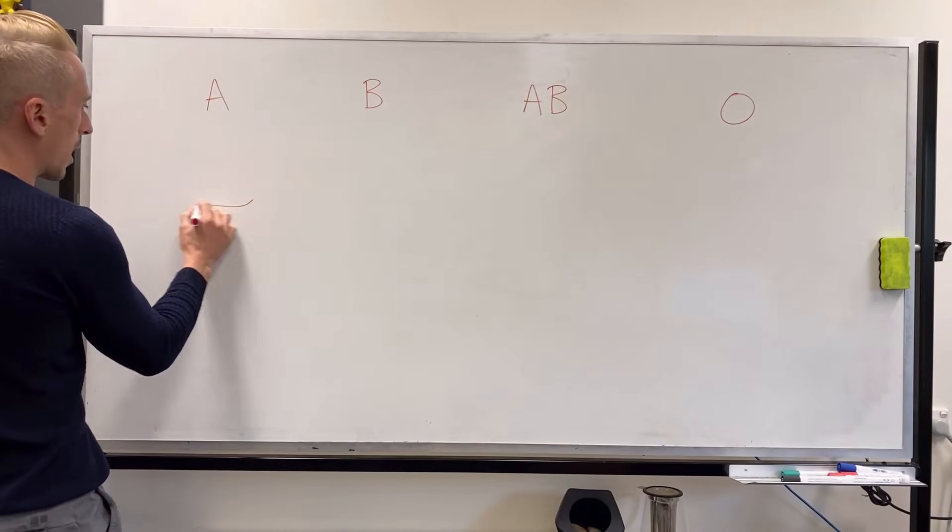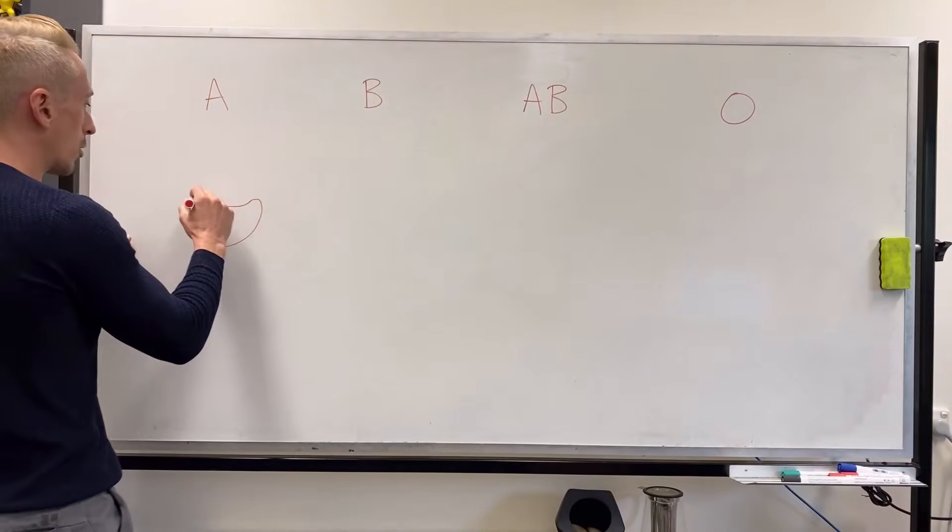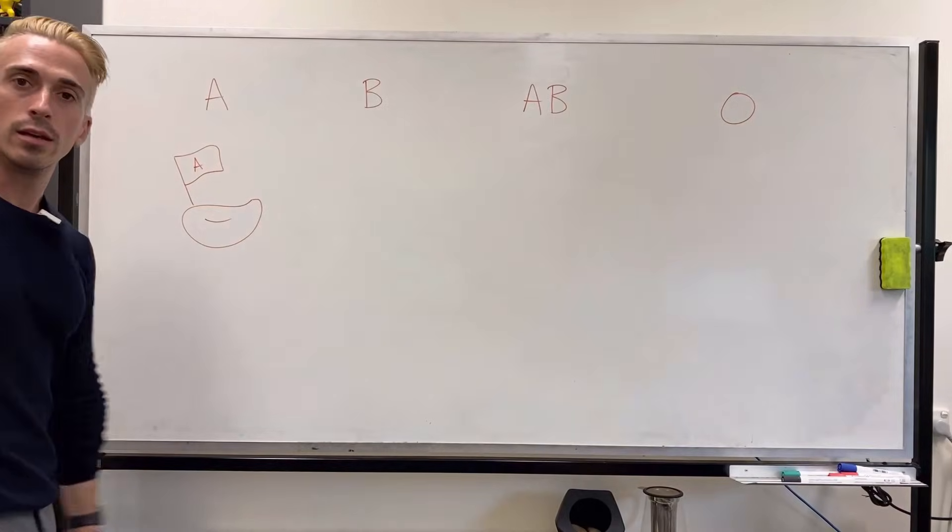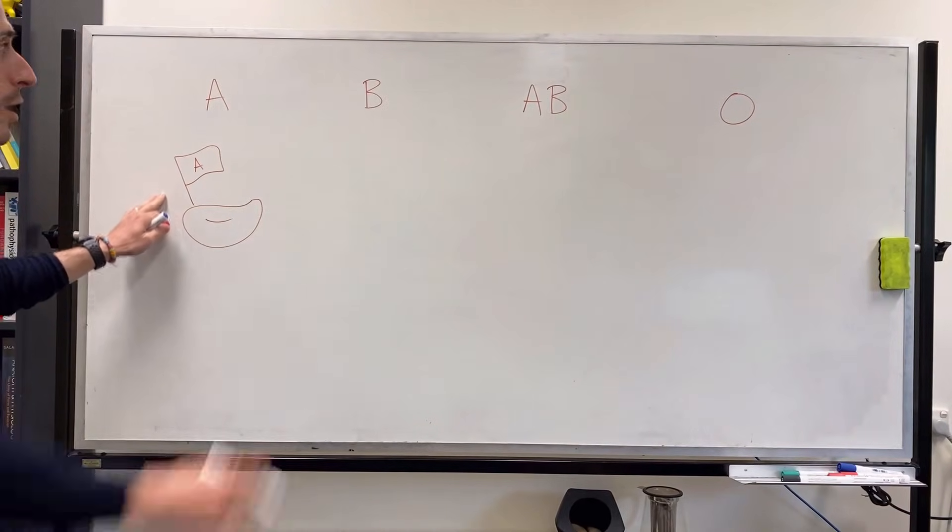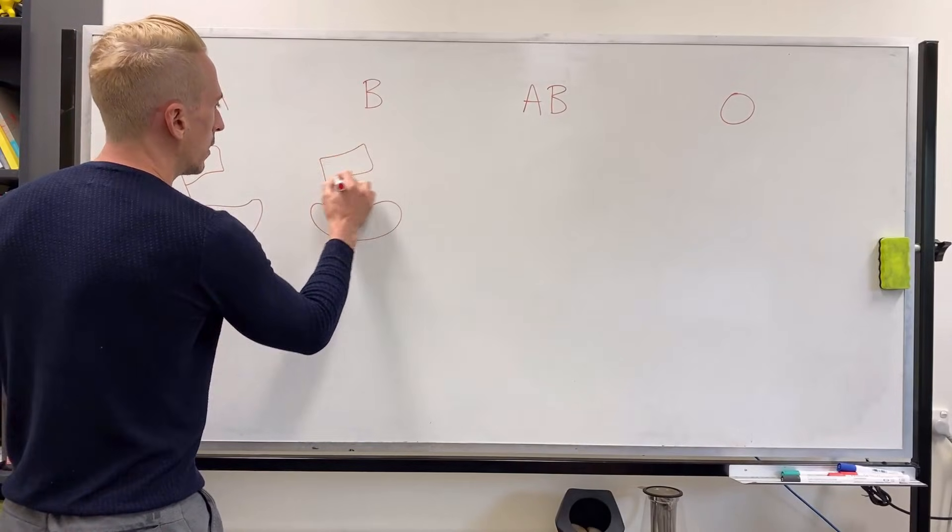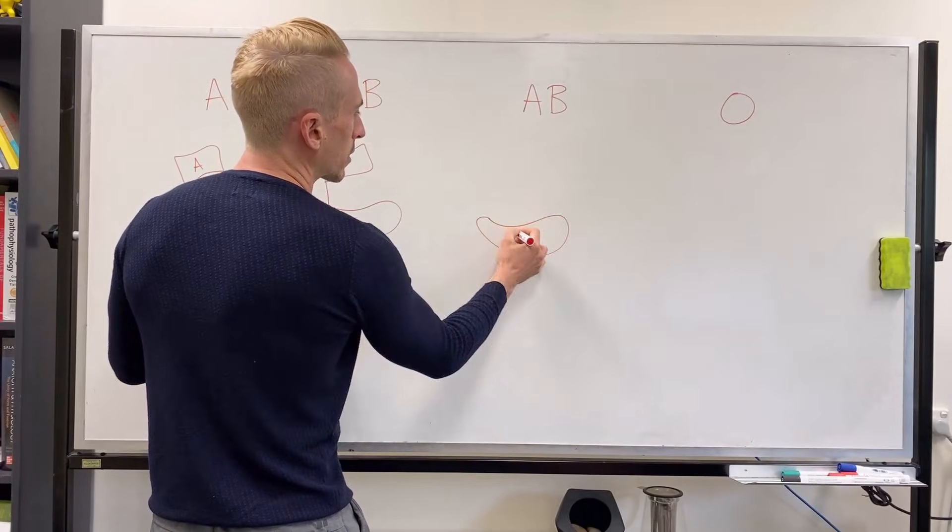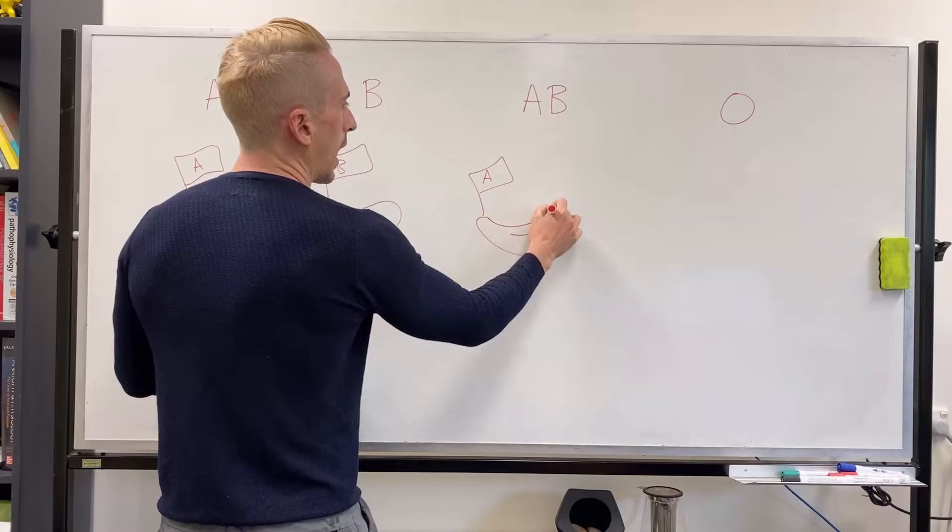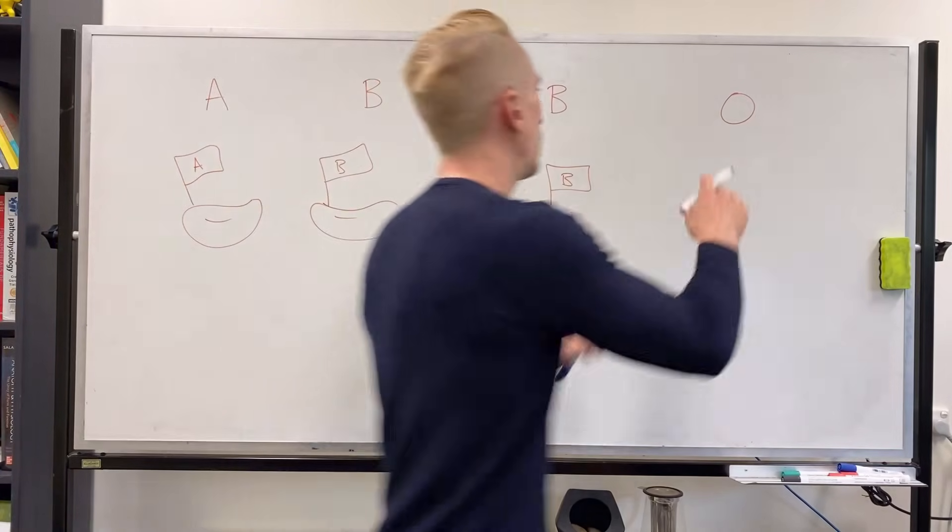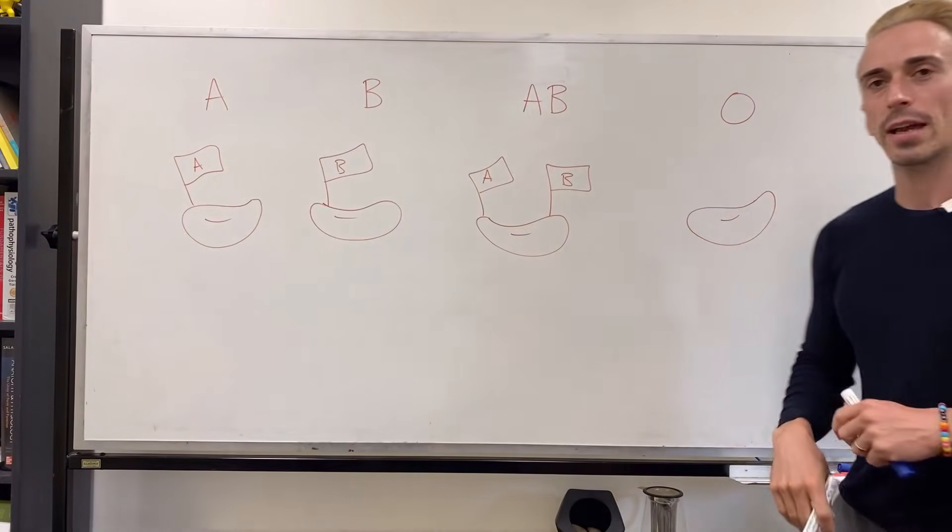This is what it is: you've got a red blood cell and that red blood cell will have a protein on it or a flag, and this flag is going to say A. So that's the antigen and the antigen is A. For B, it's a red blood cell and it's going to have a B flag or B antigen. For AB, it's going to have both an A flag and a B flag, so both the A antigen and B antigen. And for O, the red blood cell doesn't have any flags or any antigens.